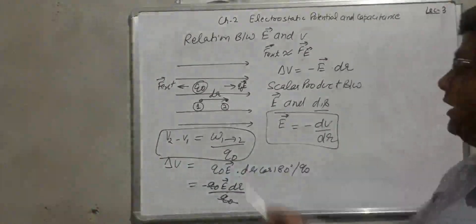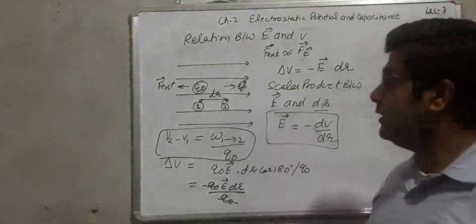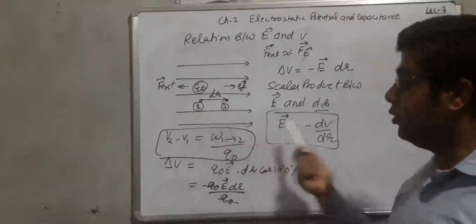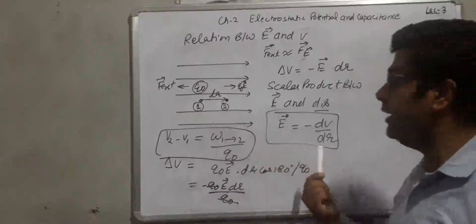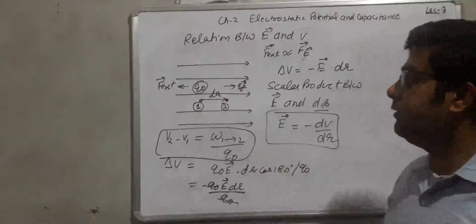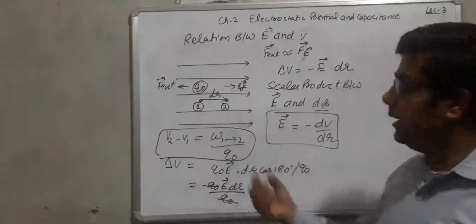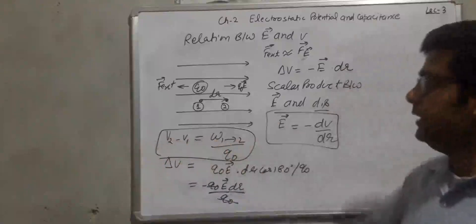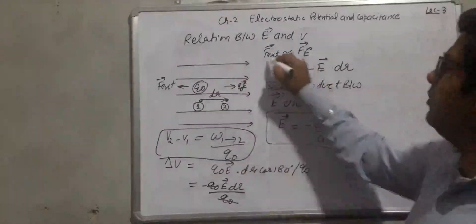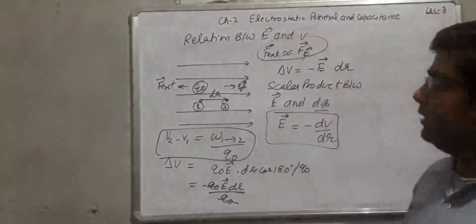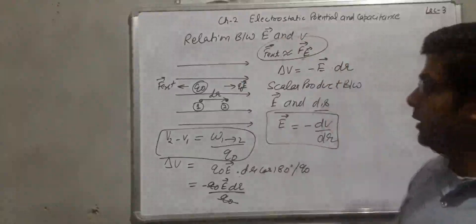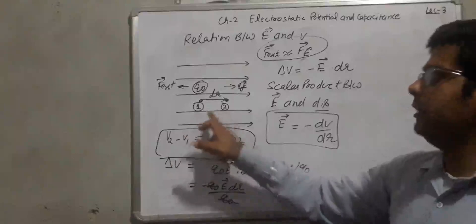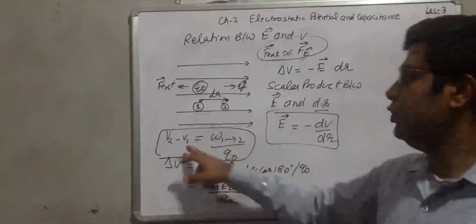To summarize: we have a uniform electric field and we want to take the test charge from point 1 to point 2. There is a force acting due to the electric field, Q0 into E. We apply an external force opposite to the direction of the electric field. For calculation purposes, the external force is nearly equal to the electric force. So the change in potential V2 minus V1, final minus initial.